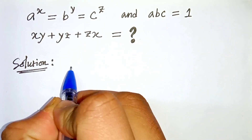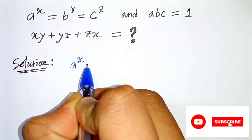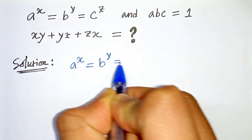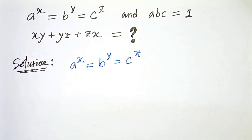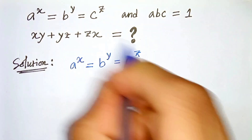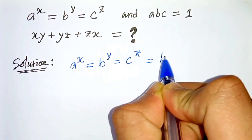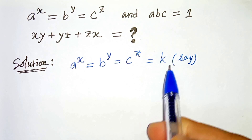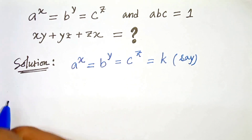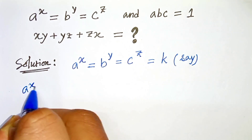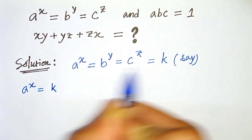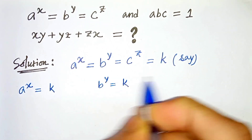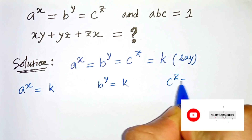We are given a raised to the power x equals b raised to the power y equals c raised to the power z. Now let us consider this as k. We have considered this as k. Now we can write a raised to the power x equals k, and b raised to the power y equals k, and c raised to the power z equals k.